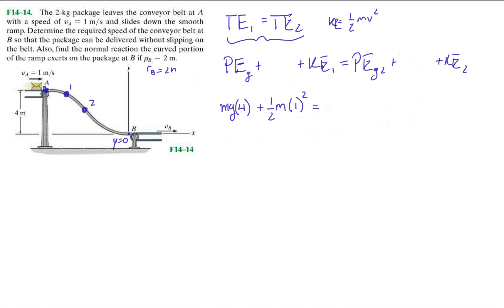It is all equal to the potential energy of the box at B, which the height of the box at B is 0, plus 1 half mv squared. And this is what we're looking for.